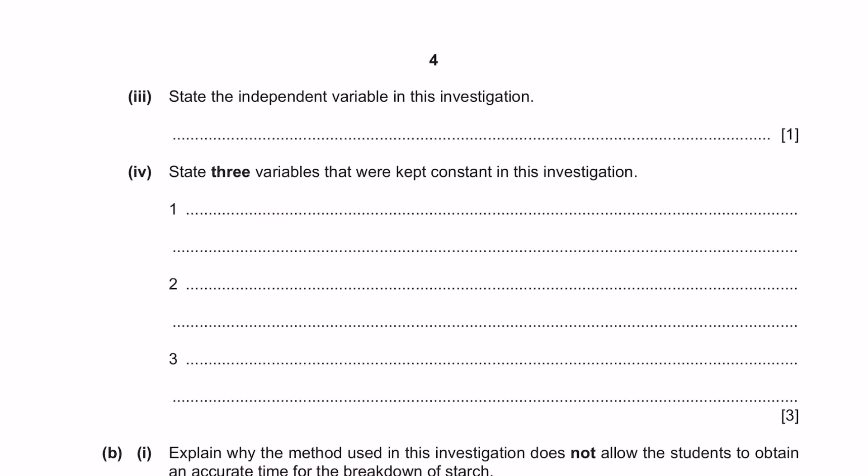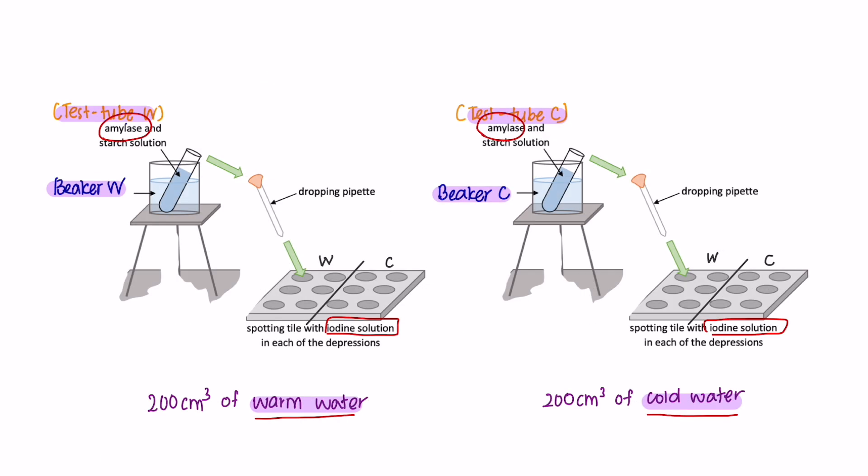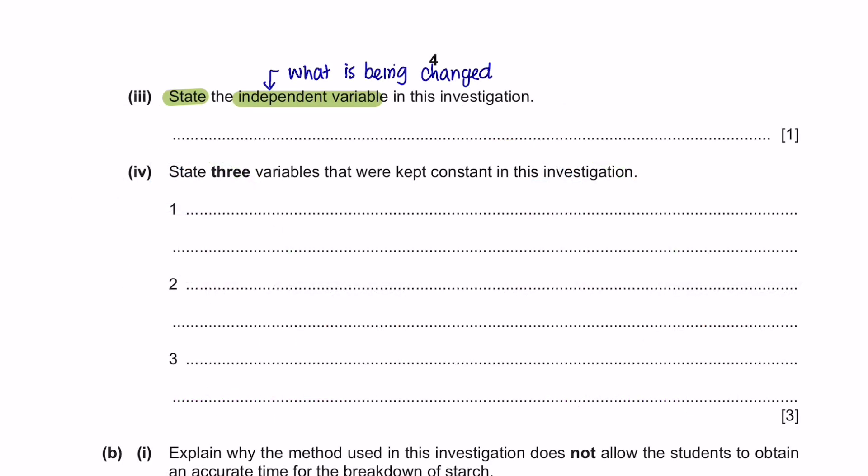Question Part 3, state the independent variable in this investigation. Independent variable is the variable that is being changed in the investigation. And we used 2 different beakers here. And what was being changed in the experiment is that one was tested with warm water and the other with cold water. So that would be the temperature.